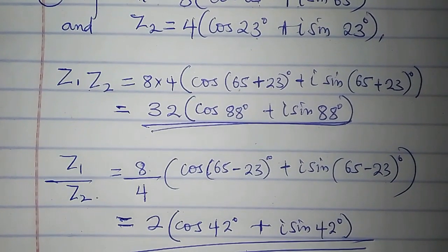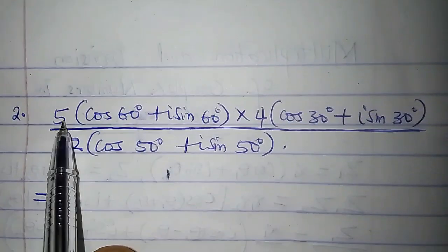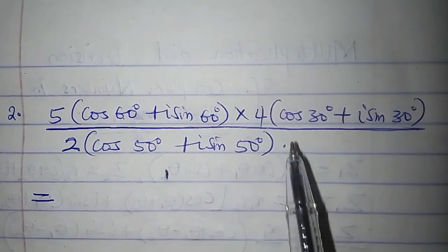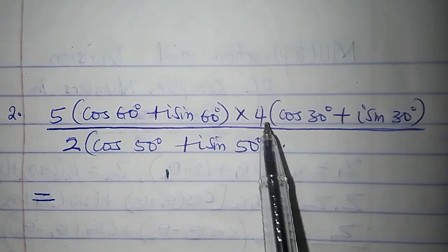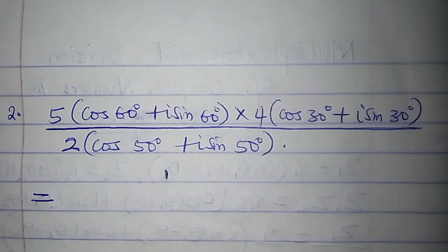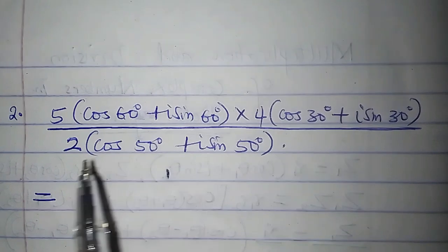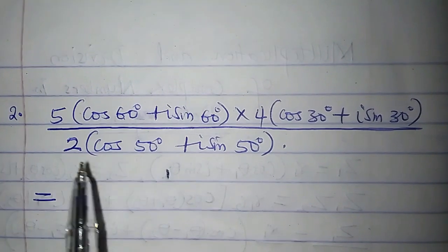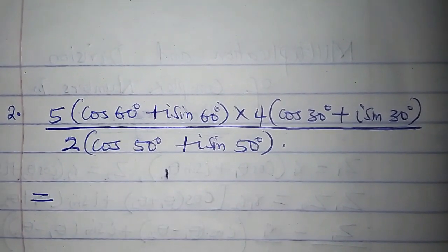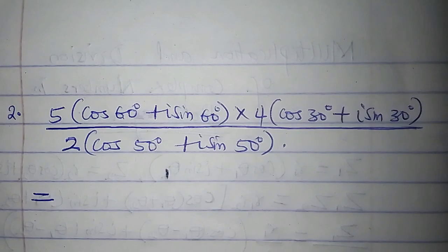Now let's combine both multiplication and division in just one question. We have 5(cos 60° + i sin 60°) times 4(cos 30° + i sin 30°), all divided by 2(cos 50° + i sin 50°). It's a mixed operation of multiplication and division.